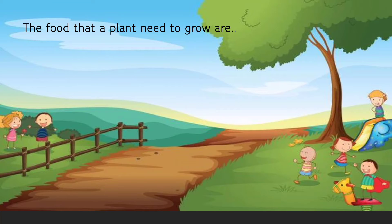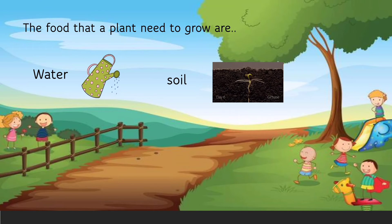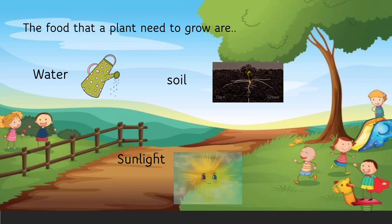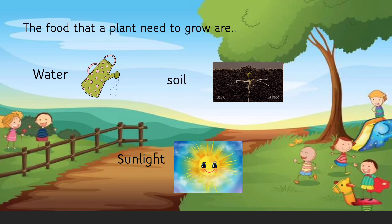How does a plant grow? The food that a plant needs to grow are water, soil and sunlight. So by these things the plants are growing.